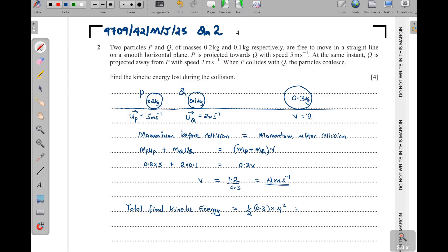Now, 4 squared is 16. 16 divided by 2, 8, 8 times 0.3. That one will give us 2.4 Joules. Then we also find the total initial kinetic energy.